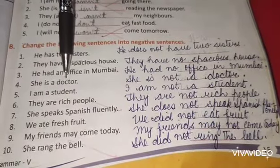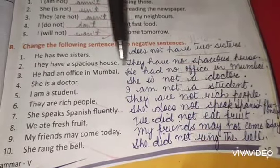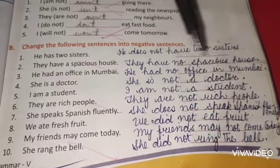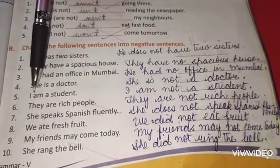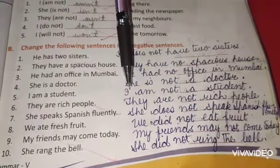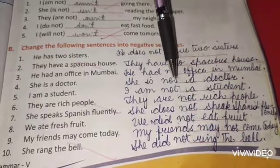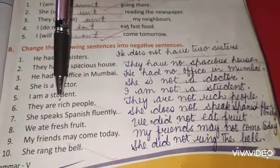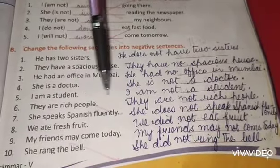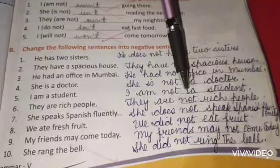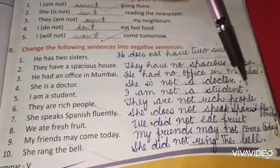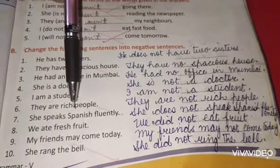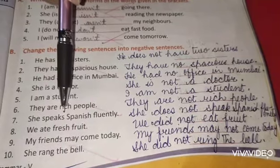Number 4: She is a doctor. → She is not a doctor. Number 5: I am a student. → I am not a student. Number 6: They are rich people. → They are not rich people. Number 7: She speaks Spanish fluently.